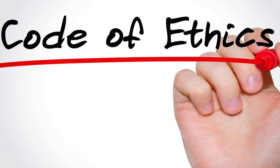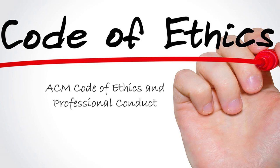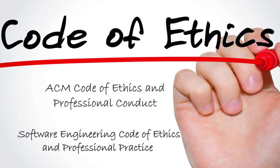Let's talk about code of ethics. Many professional organizations have codes of professional conduct. These codes provide a general statement of ethical values and remind professionals that ethical behavior is an essential part of their job and that they have specific professional responsibilities. Some of the main organizations are the ACM — Association for Computing Machinery — and the IEEE — Institute for Electrical and Electronics Engineers. They developed the software engineering code of ethics and professional practices, adopted jointly with the ACM.